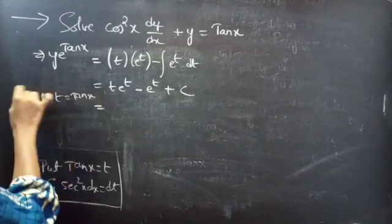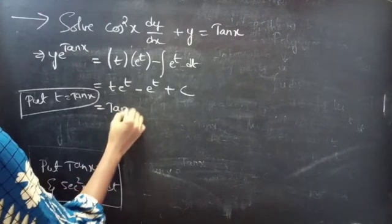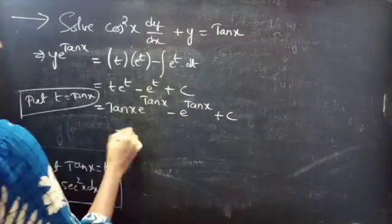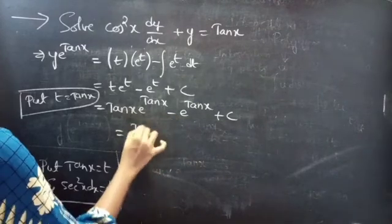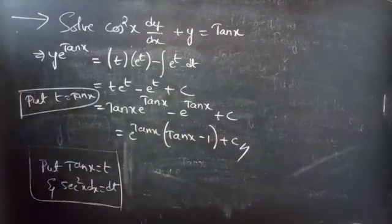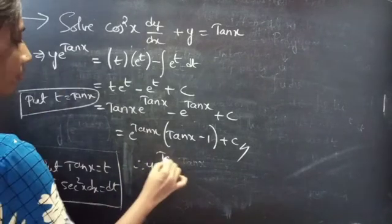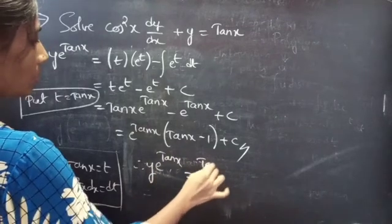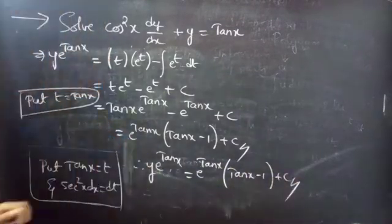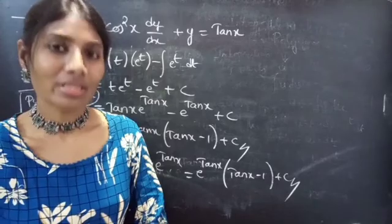Applying the integration by parts formula: ∫t · e^t dt = t · e^t − ∫e^t dt = t · e^t − e^t + C. Now put t = tan x, since tan x = t. Then we get tan x · e^(tan x) − e^(tan x) + C. Taking e^(tan x) common from the two terms, we get e^(tan x)(tan x − 1) + C. Therefore y · e^(tan x) = e^(tan x)(tan x − 1) + C is the required general solution. So we have seen a problem from differential equations in this video. Hope you understand. We will see you in the next video — until then, bye bye.